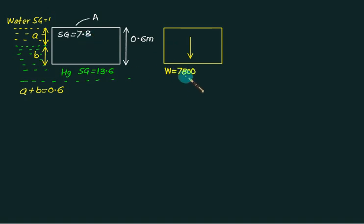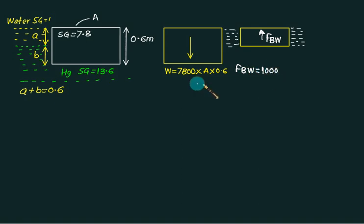First of all, the weight will act vertically downward and weight is given by W equals 7800, that is density, multiplied by the cross-section area A, multiplied by the height equal to 0.6. Now the portion which was immersed in water will experience a buoyant force up to depth equal to A, and this buoyant force will pass through the center of buoyancy in upward direction. The buoyant force due to water is weight of liquid displaced in water, so we have density of water equal to 1000 multiplied by g, multiplied by cross-section area, multiplied by depth equal to A.